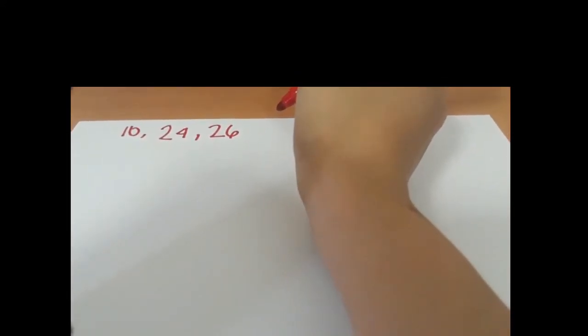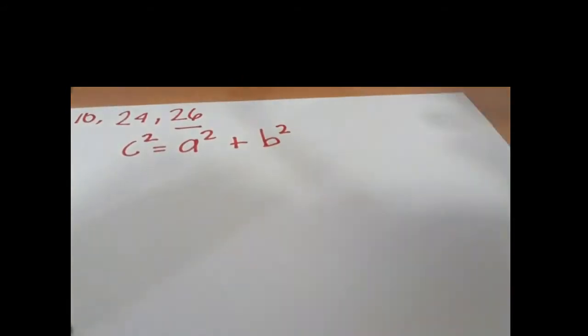Now we will try to prove that a triangle with sides 10, 24, and 26 is a right-angled triangle. First, we have to identify our C. C is the hypotenuse, or the longest side of the triangle. Looking at these numbers, we know that 26 is the longest side. Let's write down our Pythagorean theorem, with 26 squared as our C.